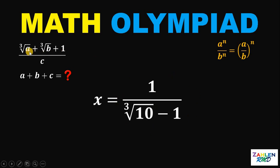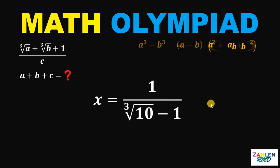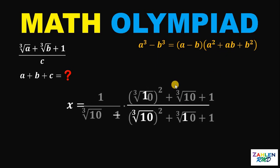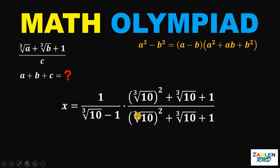To express x in the form cube root of a plus cube root of b plus 1 over c, we rationalize the denominator using the difference of two cubes: a cubed minus b cubed equals a minus b times a squared plus ab plus b squared. In our case, a is cube root of 10 and b is 1, so we multiply numerator and denominator by cube root of 10 squared plus cube root of 10 plus 1.